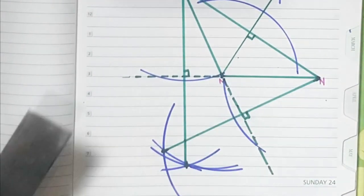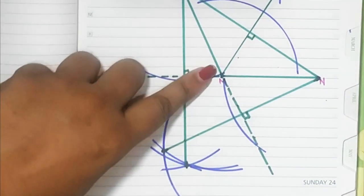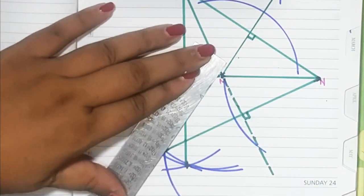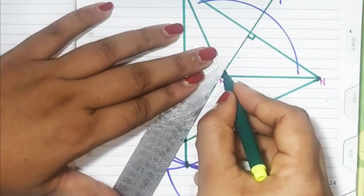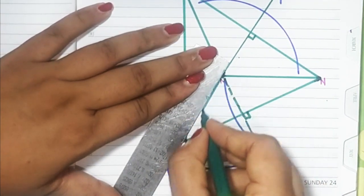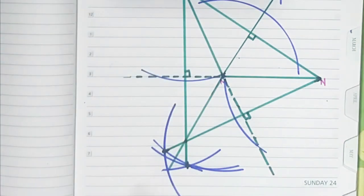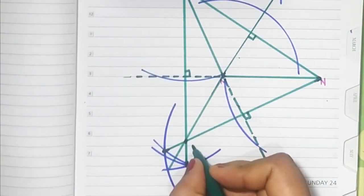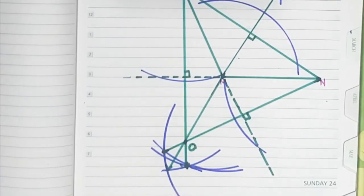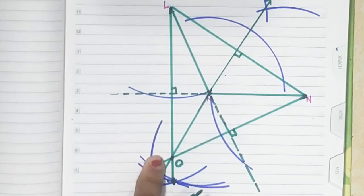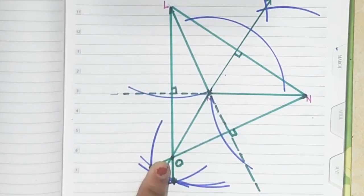All three altitudes have to meet at one point. We'll extend this altitude which is already drawn. This point is called the orthocenter, O. In an obtuse-angled triangle, all three altitudes meet outside the triangle.